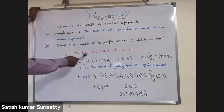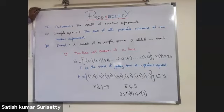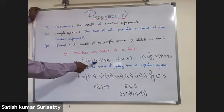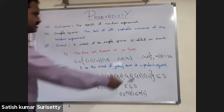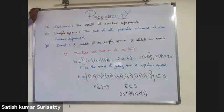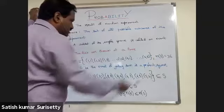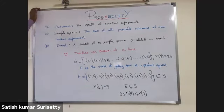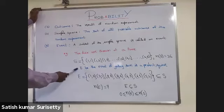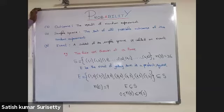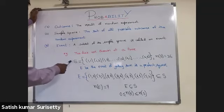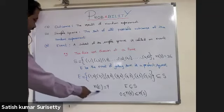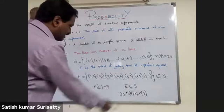Consider the example where two dice are thrown at a time. Each die shows a number from one to six, so the sample space contains ordered pairs of the form (1,1), (1,2), (1,3), and so on up to (6,6). That means there are 36 ordered pairs, so n(S) = 36, which is also called the cardinality of the set S. Let E be the event of getting a sum that is a perfect square. The ordered pairs are (1,3), (3,1), (2,2), (3,6), (6,3), (4,5), and (5,4), which is a subset of the sample space, and the number of elements in event E is seven.